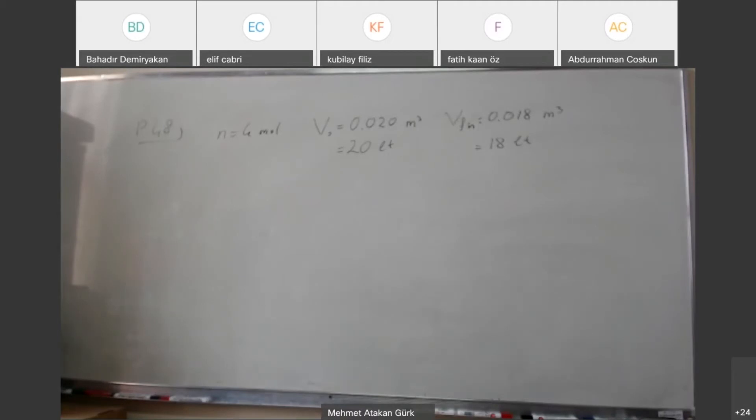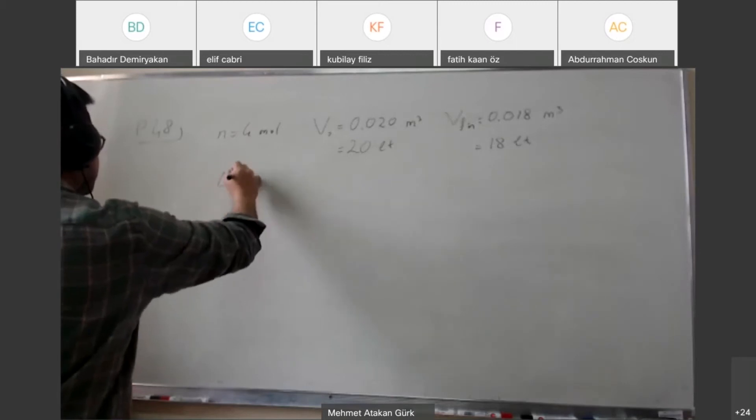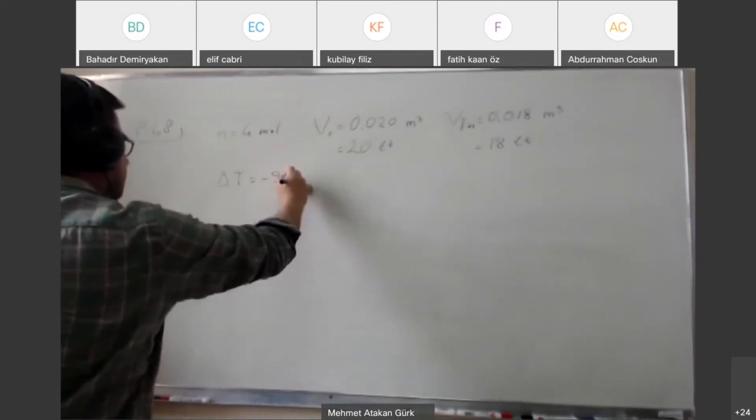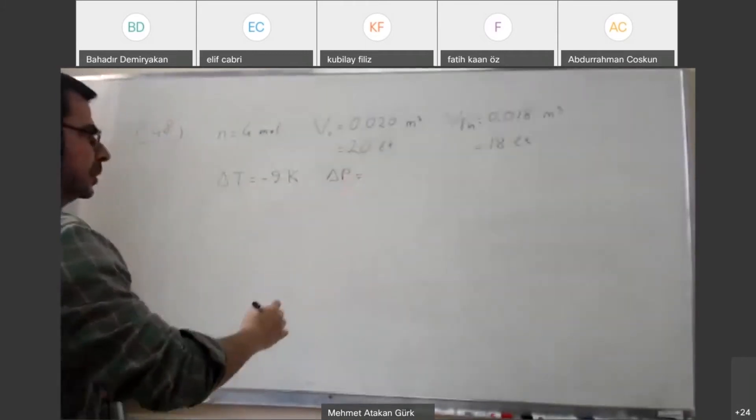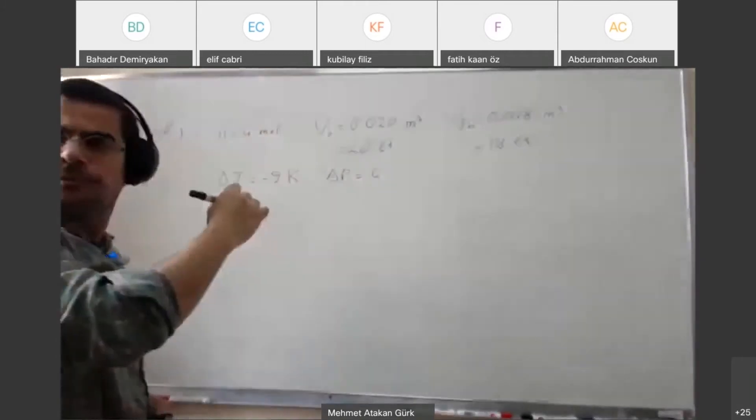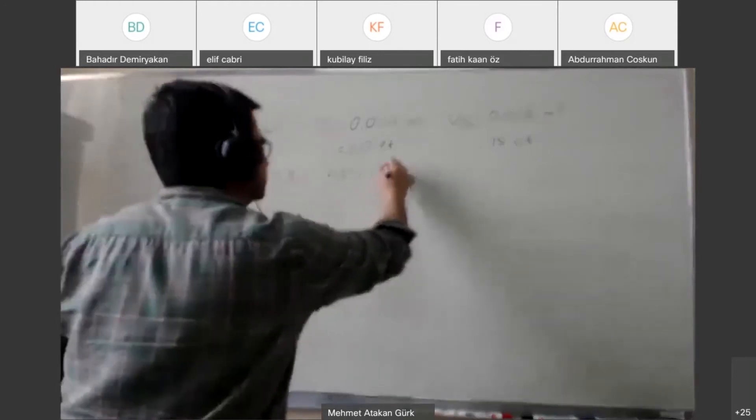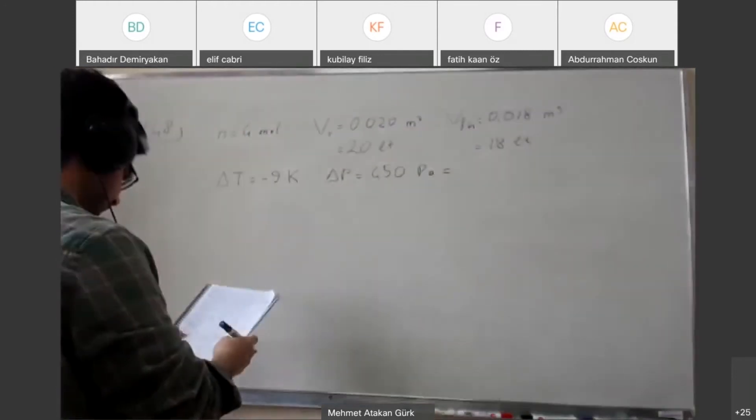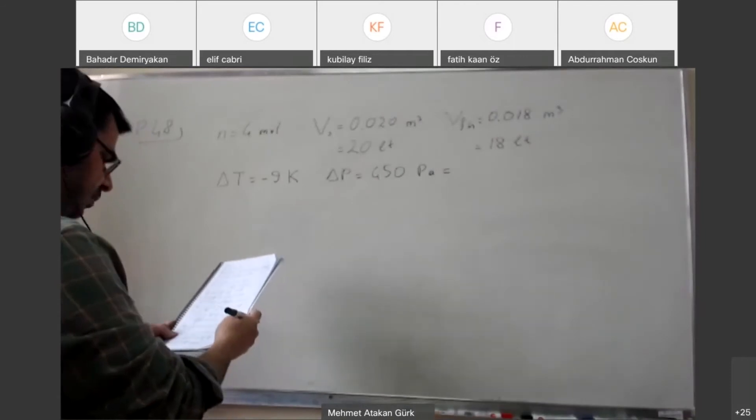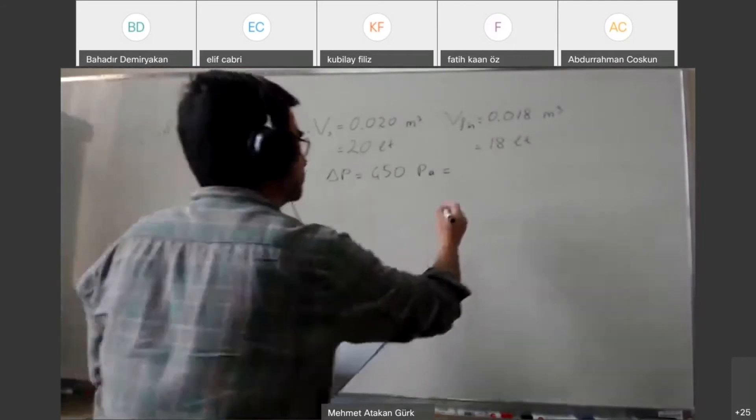And then its temperature decreases, delta T is nine degrees Kelvin or minus nine degrees Kelvin, and its pressure increases by 450 pascals.